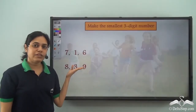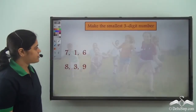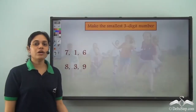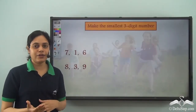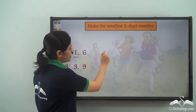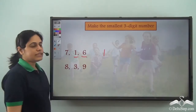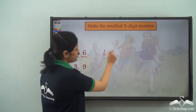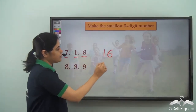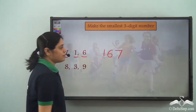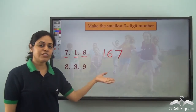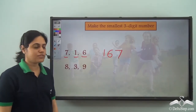Now we need to make the smallest three-digit numbers. To do so, arrange the digits in ascending order. For digits 1, 6, 7 — the smallest is 1, then 6, then 7. So 167 is the smallest three-digit number we can frame using these digits.